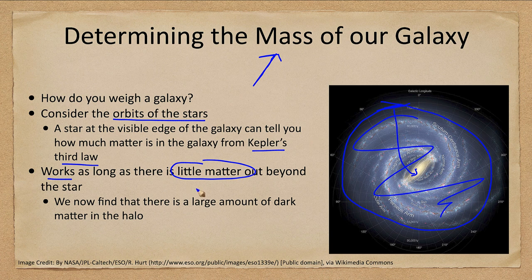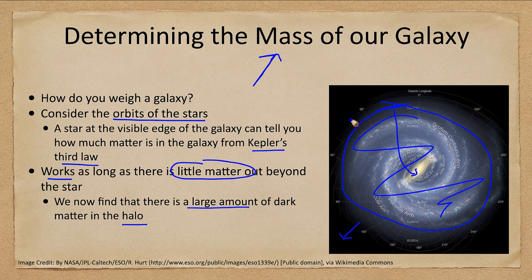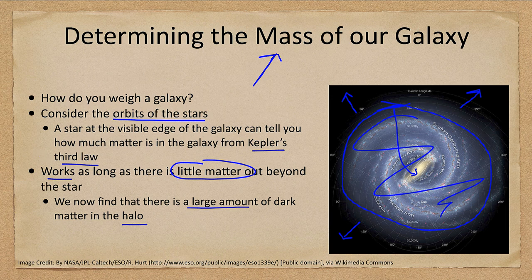This works fine as long as there is little matter beyond the star. However, one problem we've had is that we're now finding there is a large amount of dark matter in the halo, so even though we don't see material further out, there is a lot of mass out beyond the visible edge of the galaxy.